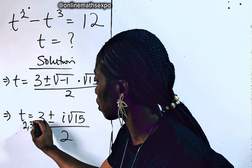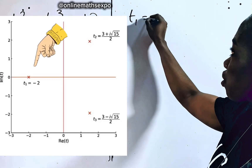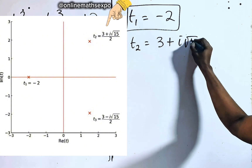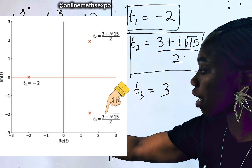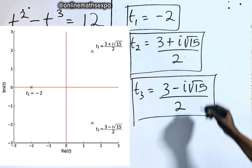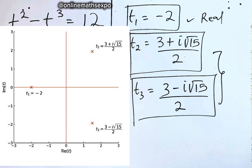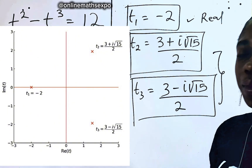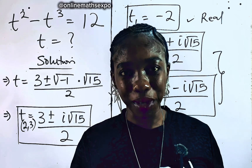So the three values of t are: the first value is t equals negative 2; the second value is t equals (3 + i√15) divided by 2; and the third value is t equals (3 − i√15) divided by 2. The first is the real solution, found on a number line. The other two are complex solutions, containing both real and imaginary parts, shown on an Argand diagram.